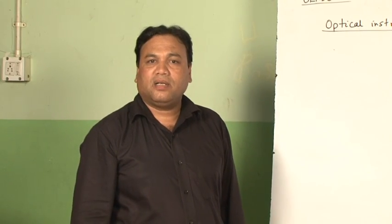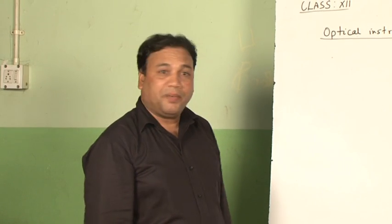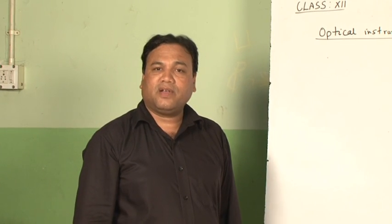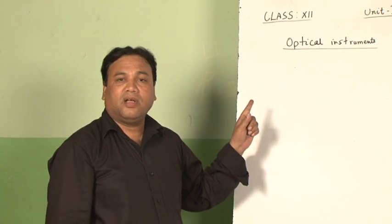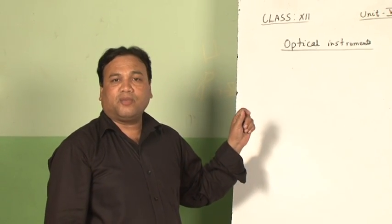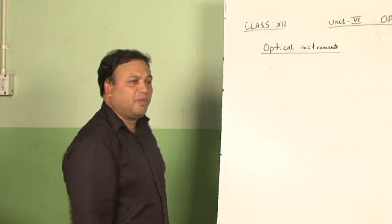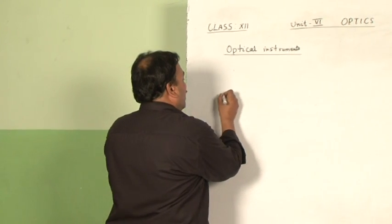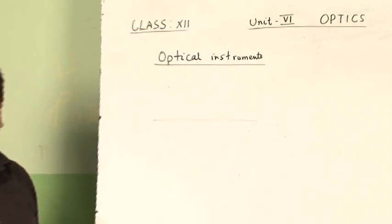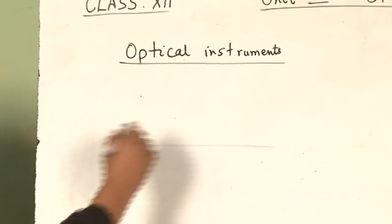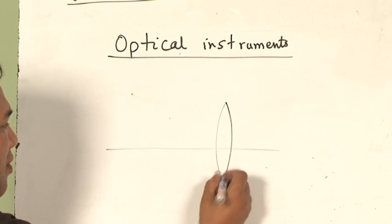The other important topic in ray optics is optical instruments. One guaranteed question will appear in your board examination. Let me begin with the simple optical instrument called a microscope — specifically a simple microscope — and explain how it works. Basically, a simple microscope is a convex lens of short focal length.